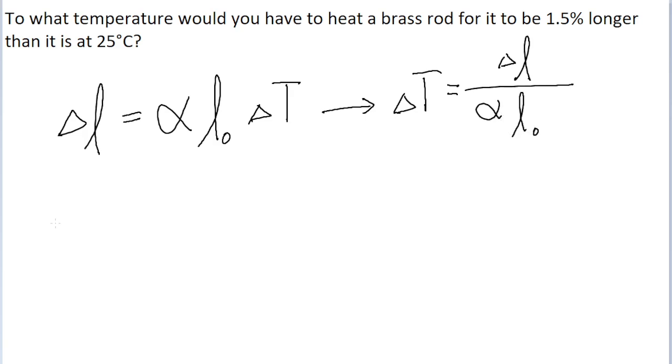Now the alpha value, the coefficient of linear expansion, is something that varies based on the material. And since the problem tells us that the rod is made from brass, we can find our alpha value for this problem by just looking it up in some kind of reference table or looking it up online.